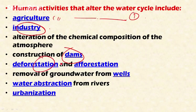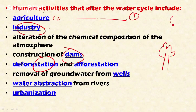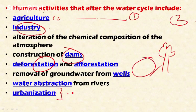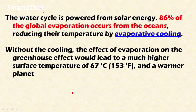Deforestation interferes with evapotranspiration and cloud formation. We are removing groundwater from wells, and more and more urbanization is utilizing large amounts of water. We are also polluting a lot of water. In these ways, humans are interfering with the water cycle, which is very damaging from an ecosystem point of view.